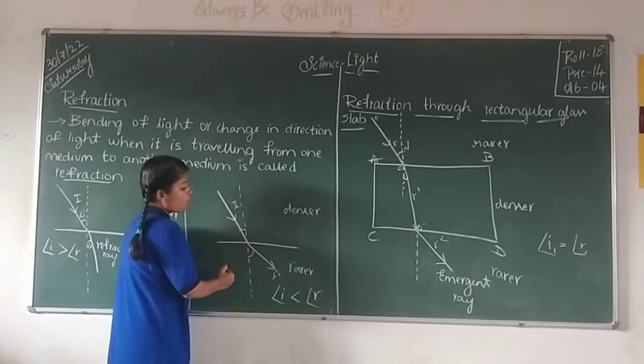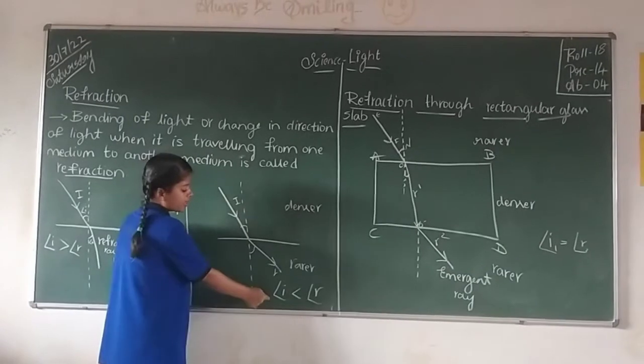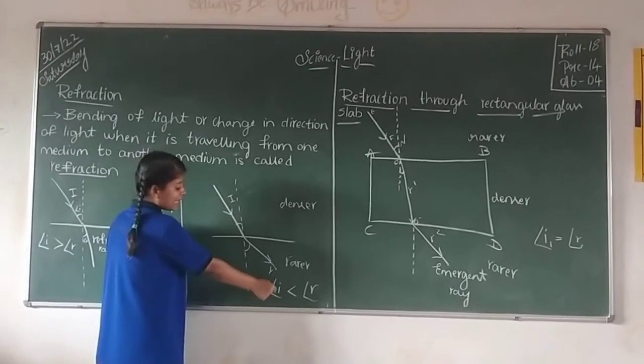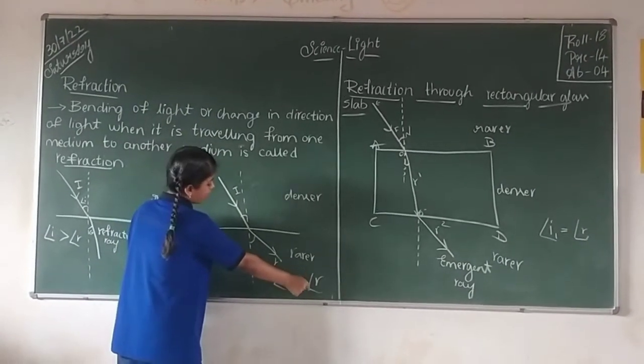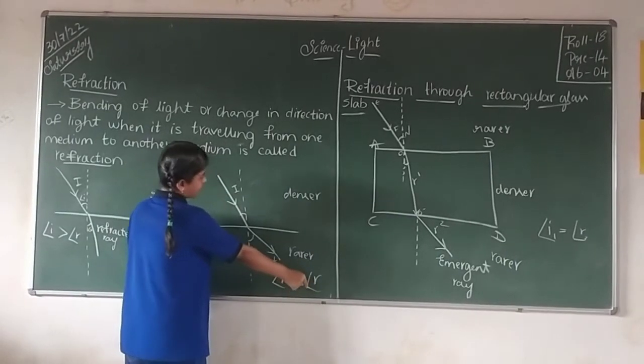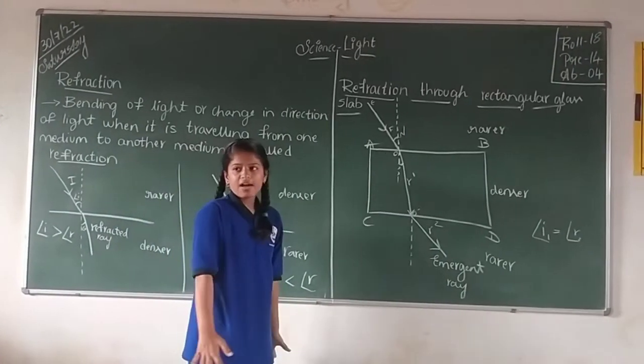So here the refracted wave will go away from normal. So here angle of incidence is lesser than angle of refracted wave.